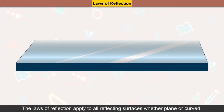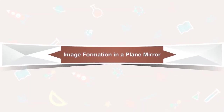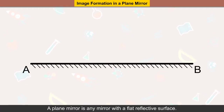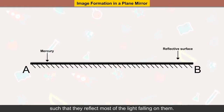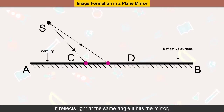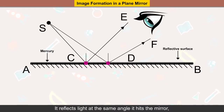The laws of reflection apply to all reflecting surfaces whether plane or curved. A plane mirror is any mirror with a flat reflective surface. Plane mirrors are polished surfaces coated with mercury such that they reflect most of the light falling on them, and they reflect light at the same angle it hits the mirror.